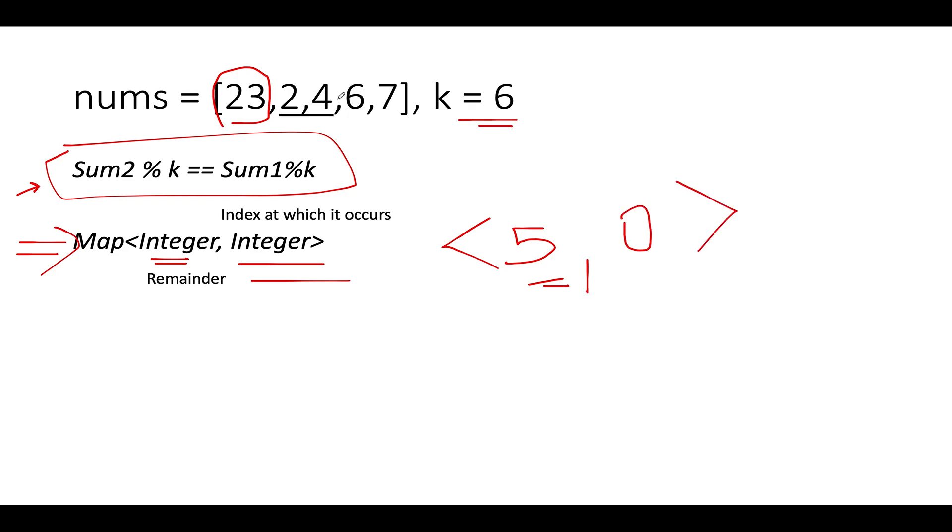Let's proceed ahead. The next element that we have is 2. So 23 plus 2 gives you 25. 25 modulus 6 what do you get?